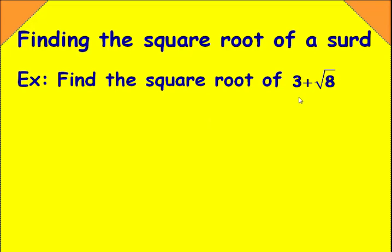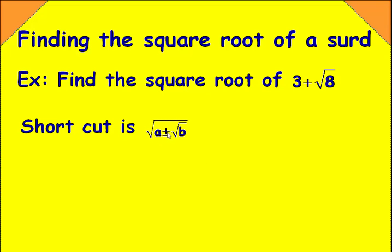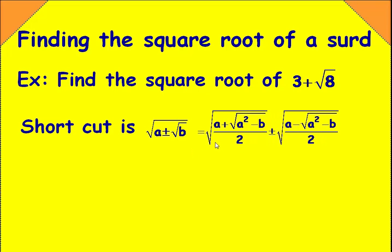To find the square root of this expression, we have a shortcut: square root of (a plus or minus root b) is equal to square root of ((a + √(a² - b)) / 2) plus or minus square root of ((a - √(a² - b)) / 2). If we have a plus sign here, we get plus or minus here and minus sign there.